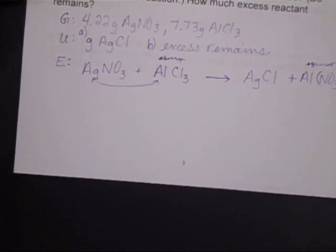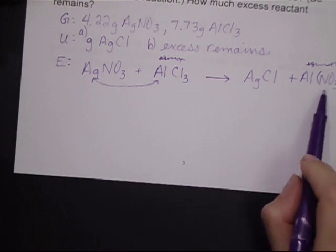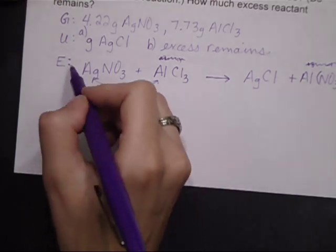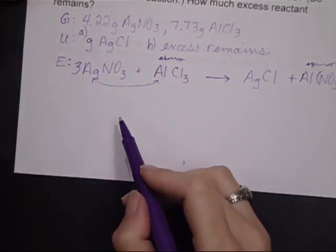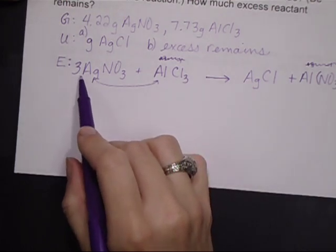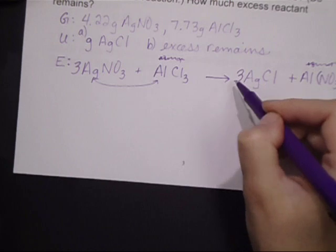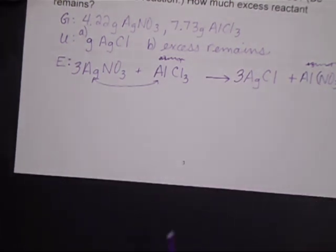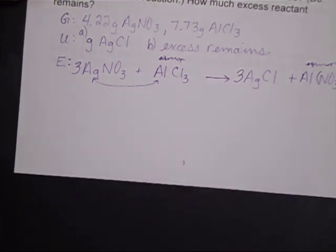Now I need to balance it. The first thing I see right off the bat is that I have three nitrates here. If I've got three over here, I have to have three on this side. So three for my coefficient. Now I have three silvers to go along with my three nitrates. So I need that on the other side as well. Which then gives me three chlorines and three chlorines. And it looks like I'm good to go.